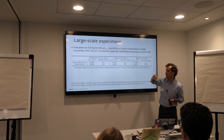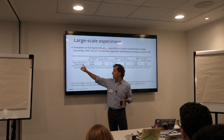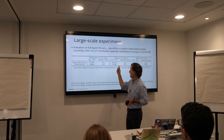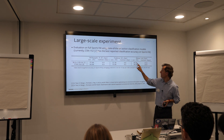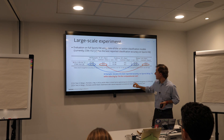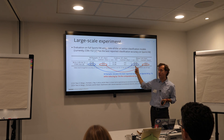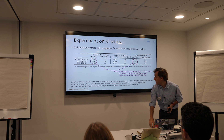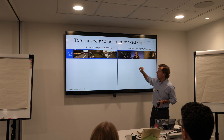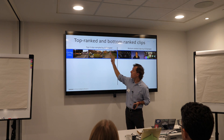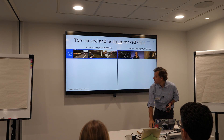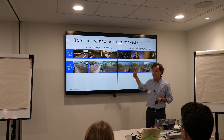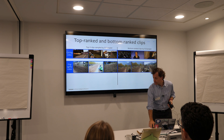We also scaled up to the full Sports 1 Million dataset using two deep classifiers with state-of-the-art accuracy. CSN, the network Du presented earlier, has the best numbers on Sports 1M with dense evaluation. Even so, we managed to improve it by 7% by replacing dense evaluation with SAMPLER-based sampling, while reducing inference cost by 15 times. A visualization of the top three and bottom-ranked clips selected by SAMPLER shows that top-ranked clips display the activity in full, while bottom-ranked clips are static or uninformative.